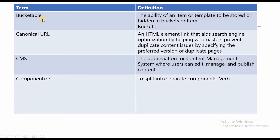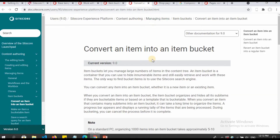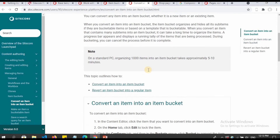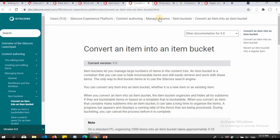What is bucketable? The ability of an item or a template to be stored or hidden in a bucket is called bucketable. All items that you can put in a bucket are called bucketable. You can read more about which items are bucketable in the documentation links provided.